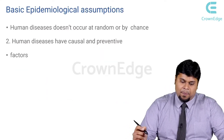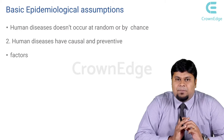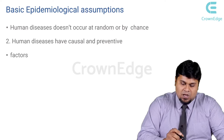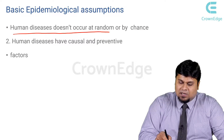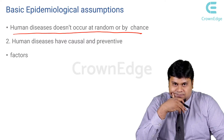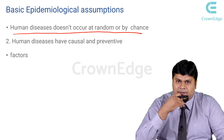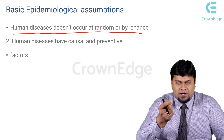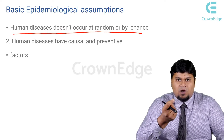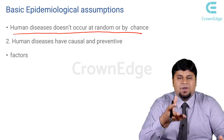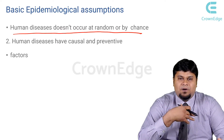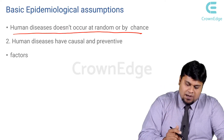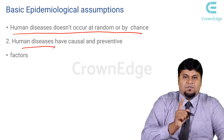Now there are certain basic epidemiological assumptions we have to understand. First and foremost: human diseases don't occur randomly or by chance. Disease, if it occurs, has to have a reason for it, a condition for it, a conducive environment for it, or an established risk factor. Remember, there is nothing random in being healthy, and there is nothing random in being diseased as well.